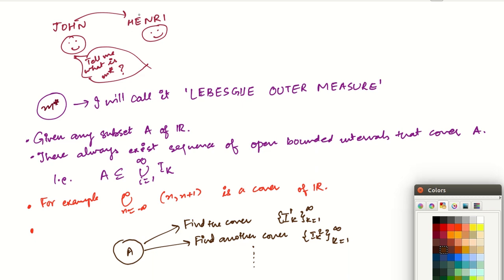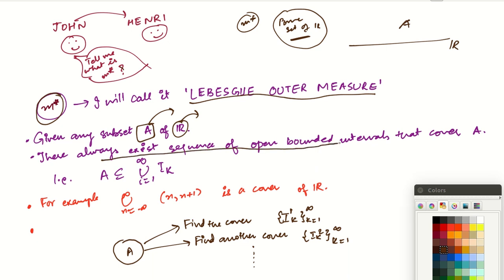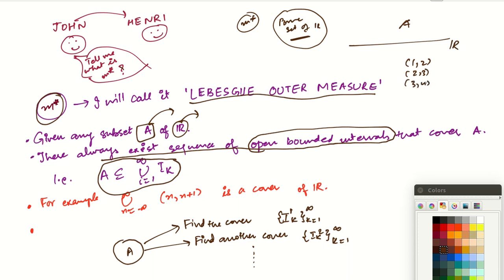Now Henry is teaching John what M star is. M star is called the Lebesgue outer measure. Since M star is defined for the power set of R, it has a definition for every subset A of R. Henry says: take any subset A of R — it can be arbitrarily any subset. Then there always exists a sequence of open bounded intervals such that A is contained in the union of those intervals.